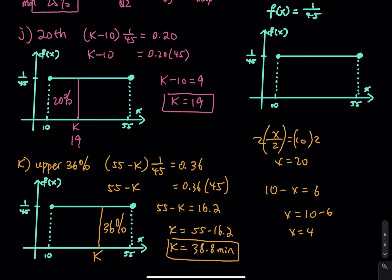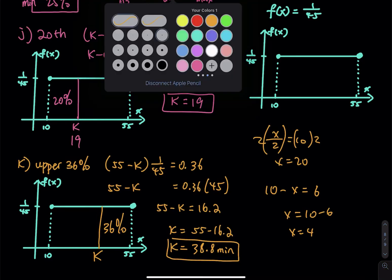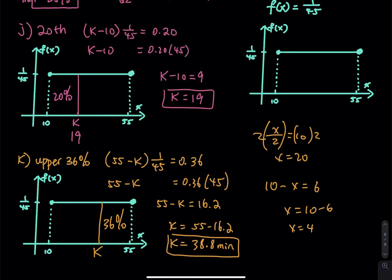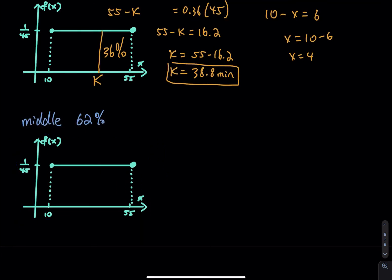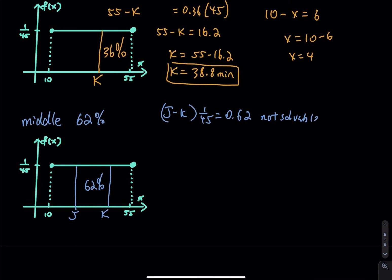Now let's add one more part: we talked about 20% on the left and 36% on the right — how about the middle? You don't see this problem often in textbooks, but it's good to cover. Let's talk about the middle 62%. With 62% in the middle of the graph, we get two cuts, j and k. But the equation j minus k times 1/45 equals 0.62 is not solvable because we cannot solve one equation with two unknowns.